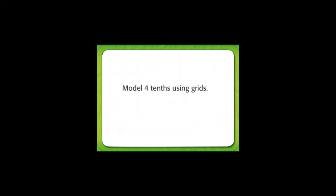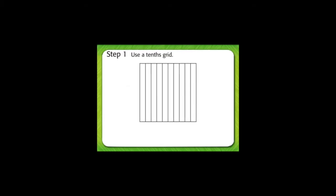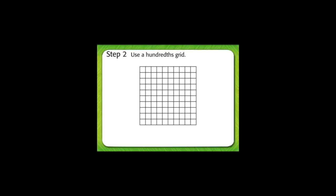Model four-tenths using grids. First, use a tenths grid. Shade four of the ten parts to show four-tenths. Next, use a hundredths grid. Shade forty of the one-hundred parts to show forty-hundredths.